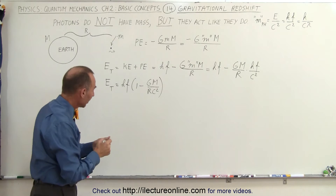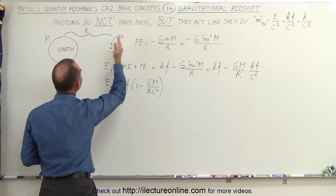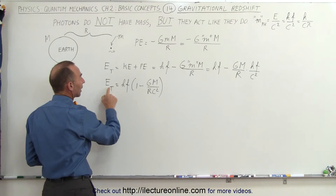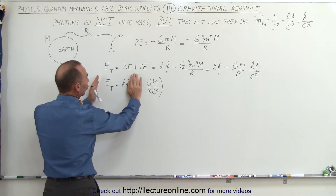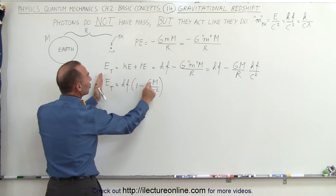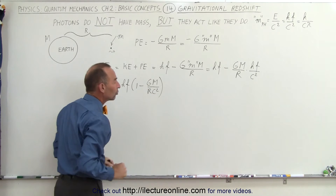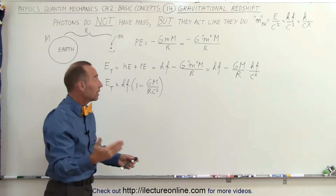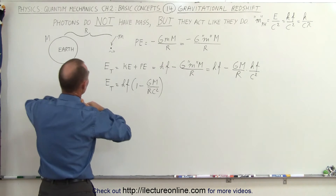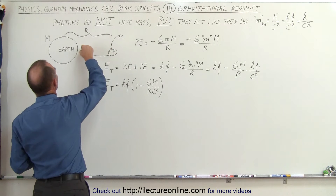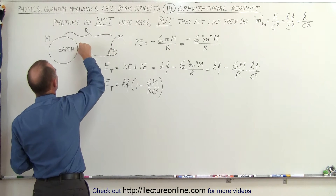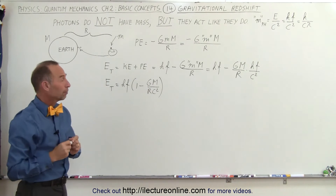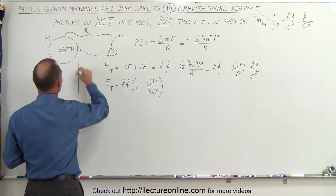So when a photon is inside a gravitational field like the earth's, its total energy equals hf — normally the energy of a photon — times (1 minus GM over rc squared). Let's calculate what this quantity equals at the earth's surface. We'll place our photon right at the earth's surface and find out what that term amounts to.